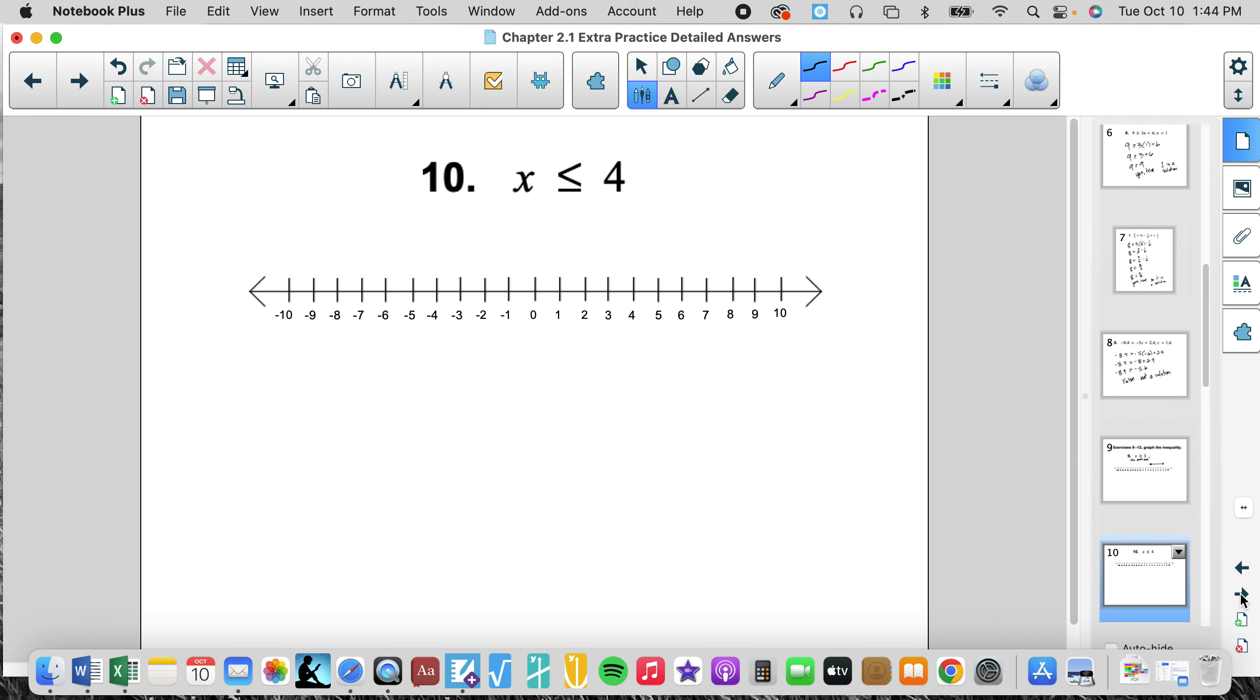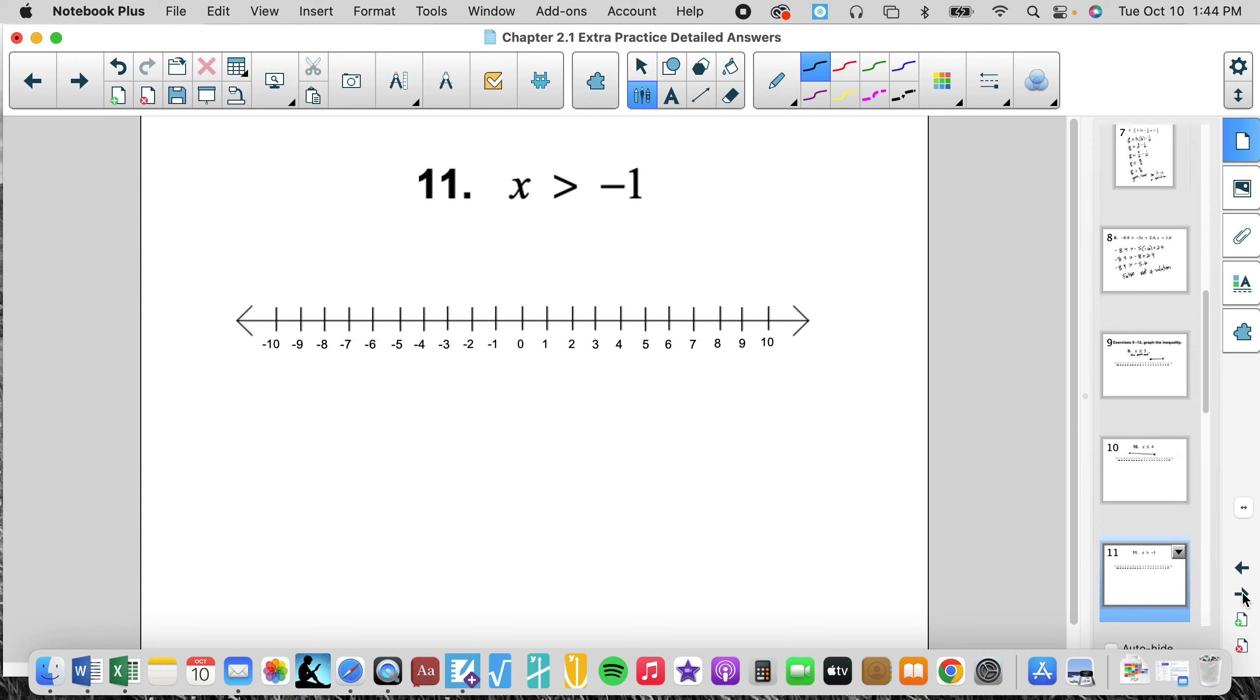X is less than or equal to 4. Again we have a closed circle. This time the solutions are less than, so we would go off to the left there. You need arrows on your lines. Make sure that you are notating correctly.